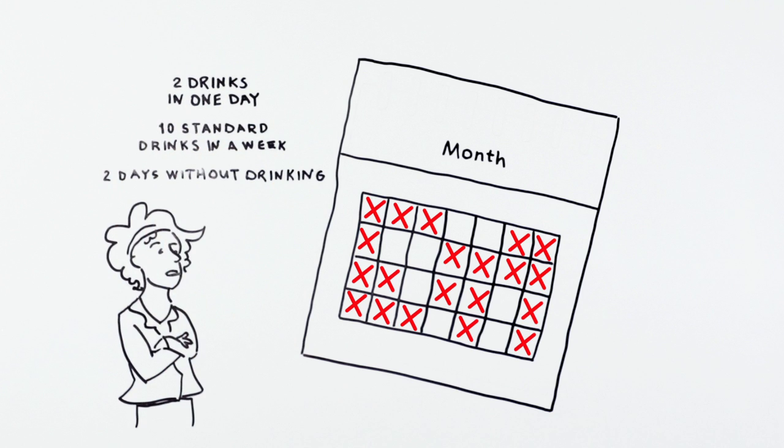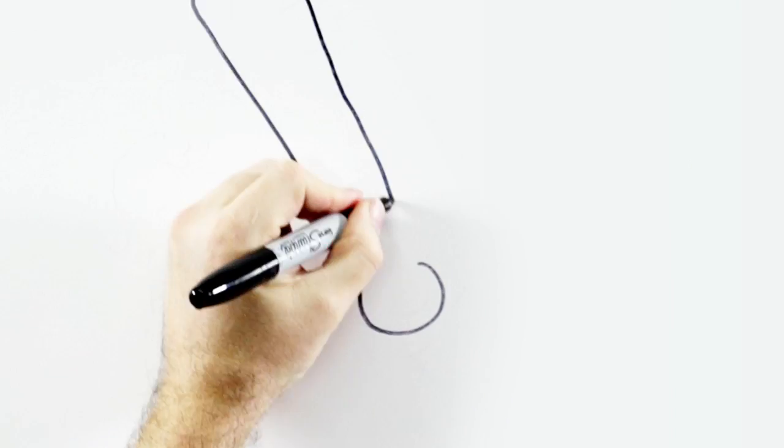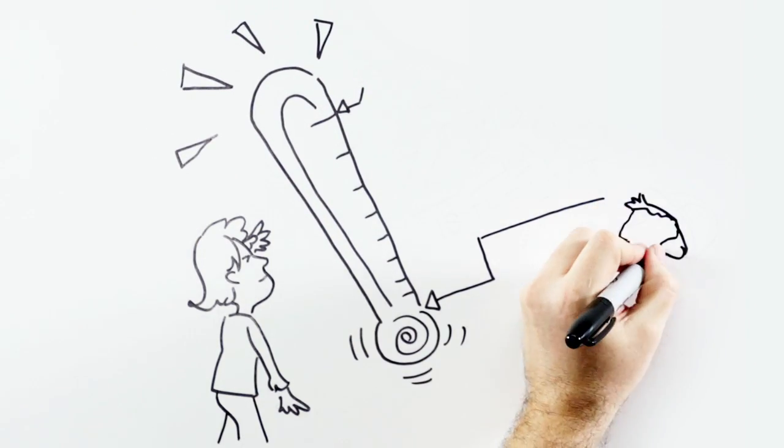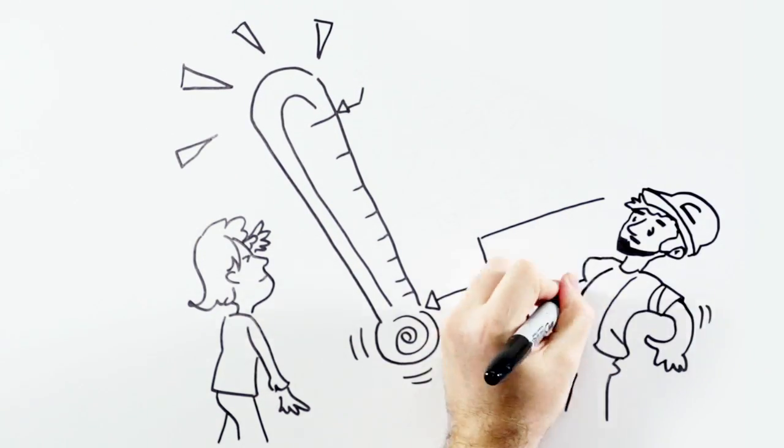These are maximum amounts to decrease your risk of injury and chronic disease, so less is always best. Now that you know what one standard drink is and how to rethink your drinking to lower your risk of alcohol-related injuries and disease,